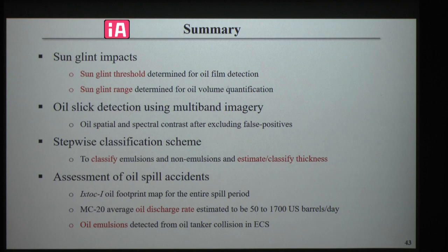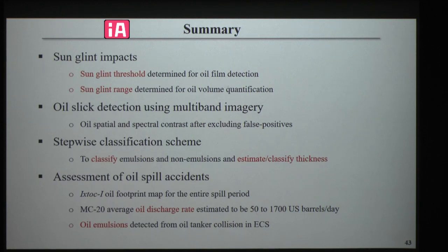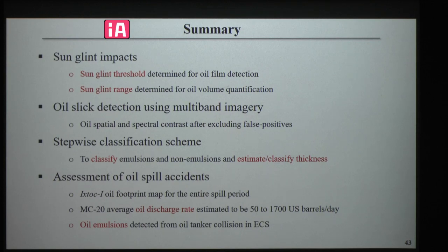In summary, the sun glint impact has been quantified with the sun glint threshold determined for oil film detection. The sun glint range has been determined for oil volume quantification. Oil slick can now be detected using multiband imagery by spatial and spectral contrast, and a stepwise classification scheme has been proposed. The IXTOC oil spill footprint map for the entire spill period has been generated. The MC-20 average oil discharge rate is estimated to be 50 to 1,700 US barrels per day. Oil emulsion has been detected from the oil tanker collision in the East China Sea.